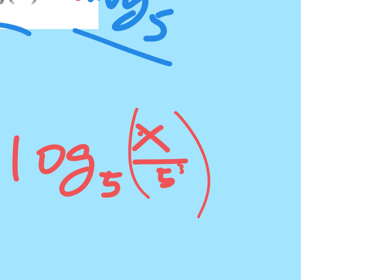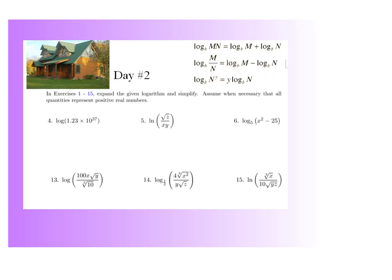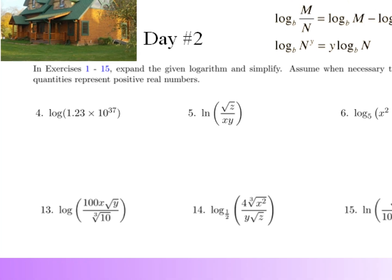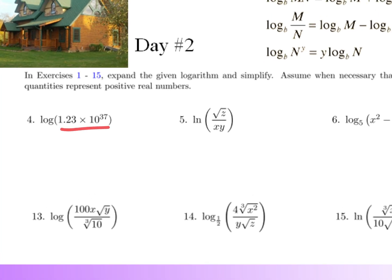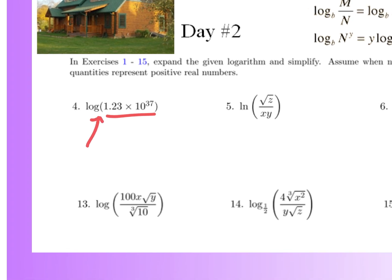Log base five of x over five to the third — that's a good condensed answer. I know I stumped a lot of you on that one. Work time: here are some practice problems. This is a blast from the past — scientific notation. Why would that be important? Because there's a base ten here. If there's no base, remember: it's all about the base. Get that base written in, and you'll figure out how to expand and simplify. For the ln problem, write it as log base e, and write any square root as to the power of one-half.